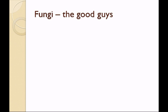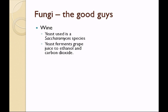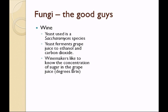Fungi can also be quite useful. Yeast is responsible for making beer and wine. In lab we're going to make wine using a Saccharomyces species — actually bread yeast, so we won't make a very fine wine, but you're going to see how the process is done. Yeast ferments the grape juice to ethanol and carbon dioxide. It's useful to know the concentration of sugar in the grape juice when we start — this is known as degrees Brix.